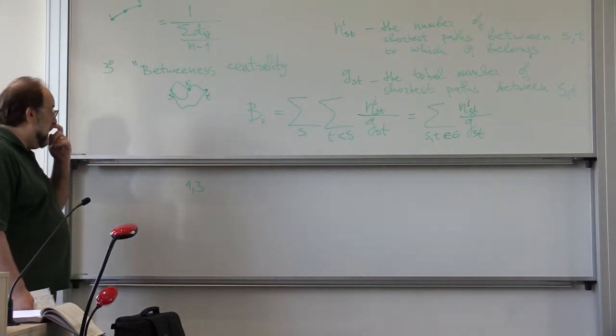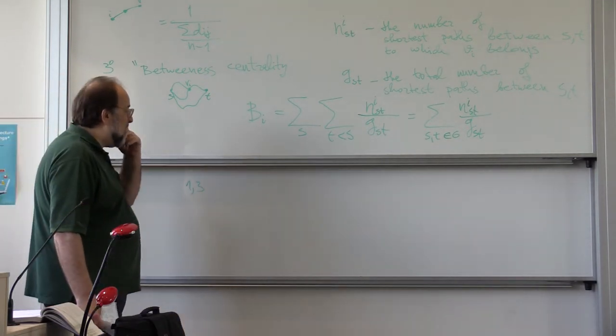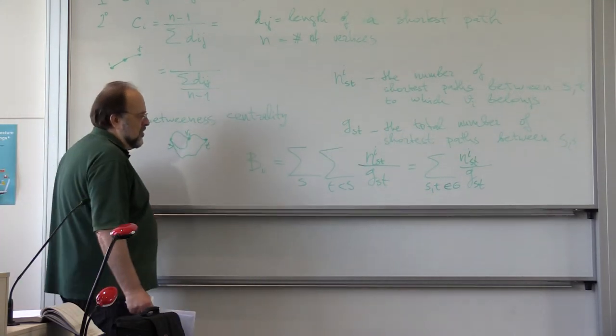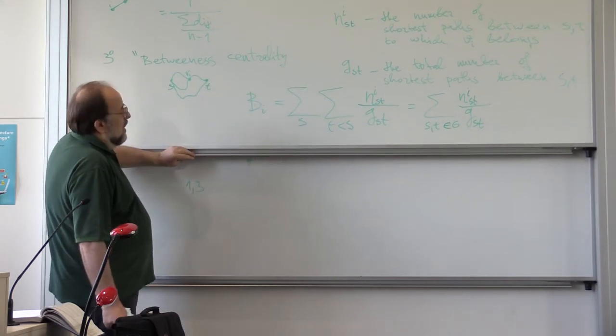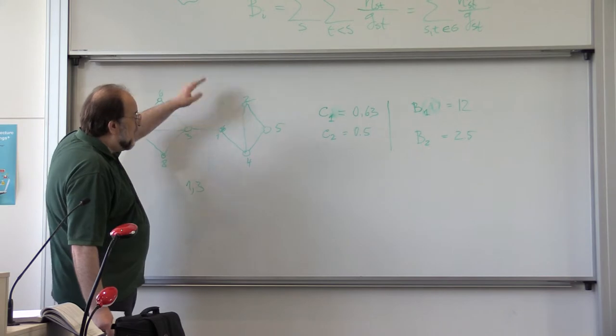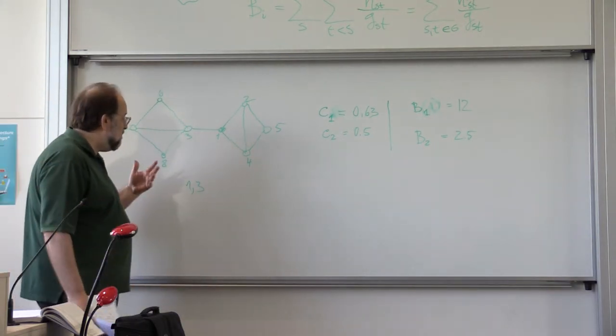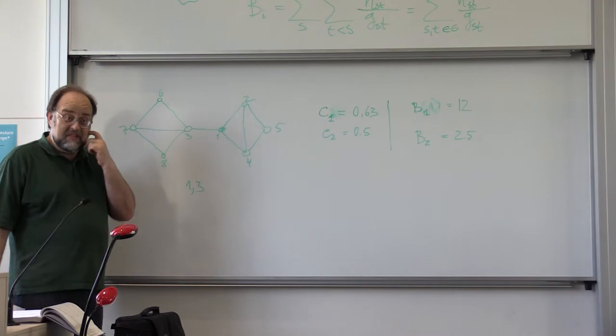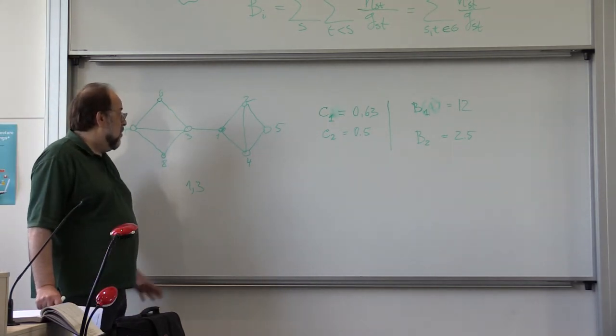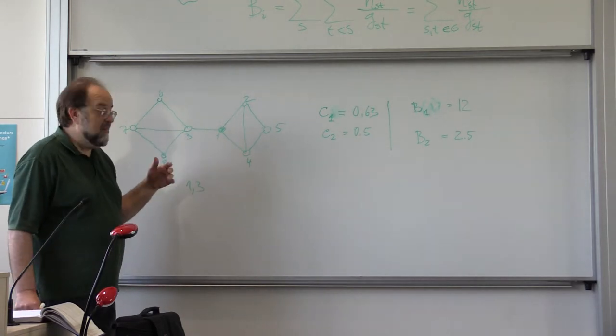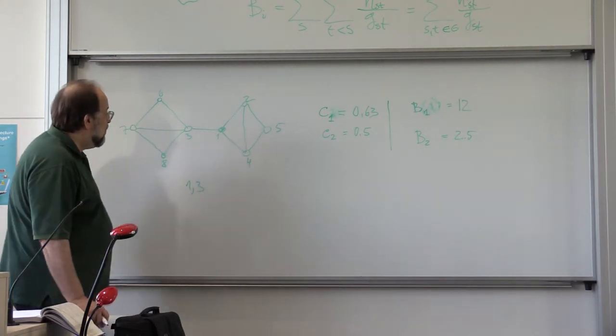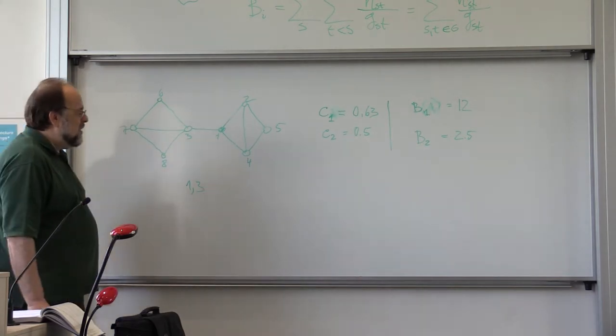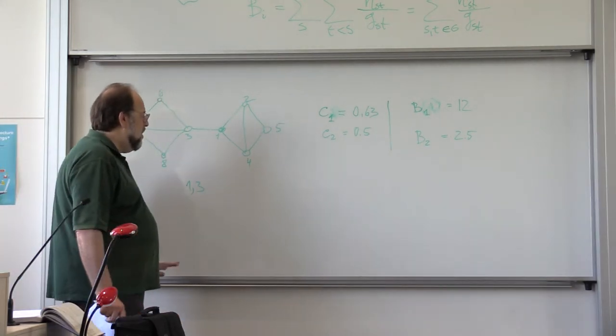But of course, there's a price to be paid. Namely, you have to run this dynamic programming algorithm that we saw in 3.1.2.1 to compute all pairs shortest paths. So this guy would get a free iPhone to recommend it to everyone else. This is the idea. Or if you want to spread the rumor, this guy is the best guy for you to do the job.